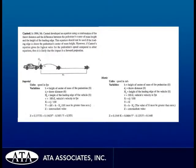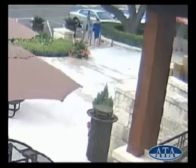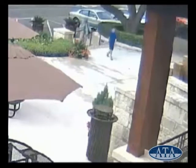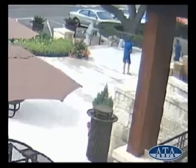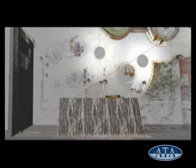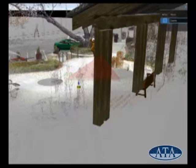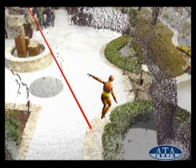A pedestrian's visibility is determined by clothing, ambient lighting, and background. In this case, an elderly person was seen in a surveillance camera falling while on a raised sidewalk. The scene was surveyed and electronically reconstructed showing the actions of the victim.